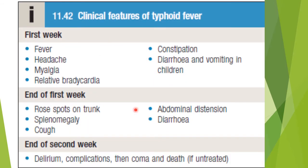This table summarizes what we discussed. In the first week: fever, headache, myalgia, relative bradycardia, constipation — and in children, diarrhea and vomiting. End of the first week: rose spots on the trunk, splenomegaly, cough, abdominal distension, and diarrhea. End of the second week: delirium, bronchitis, complications, then coma and death. We discussed this in the form of a story.